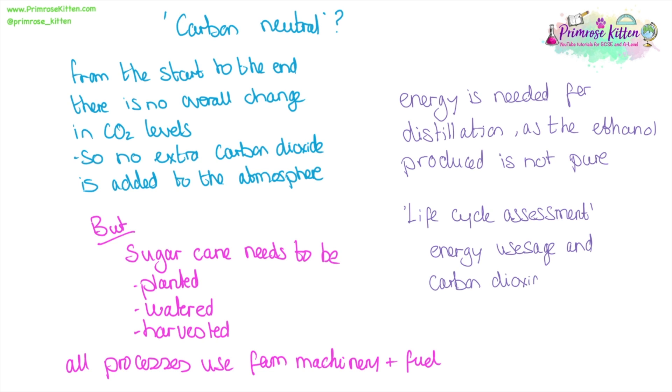If you think of the whole life of going from sugar cane, going from carbon dioxide all of the way to the combustion of the ethanol, if we think about energy usage and the carbon dioxide released at every single stage, including the transporting of the sugar cane, including the distillation of the ethanol, including all of the tractors used for watering and planting the sugar cane, is this really a carbon neutral process? Or do all of these other things actually release carbon into the atmosphere as well?